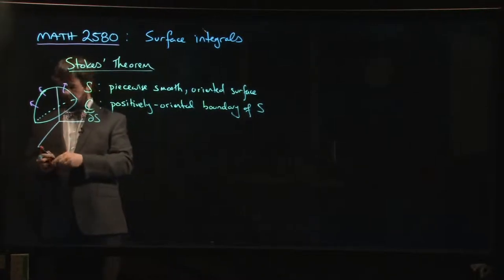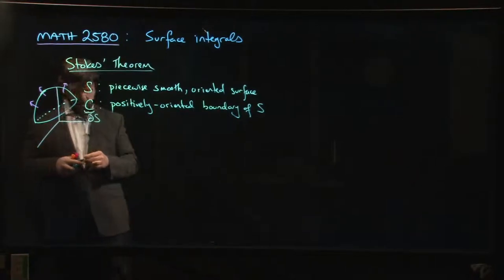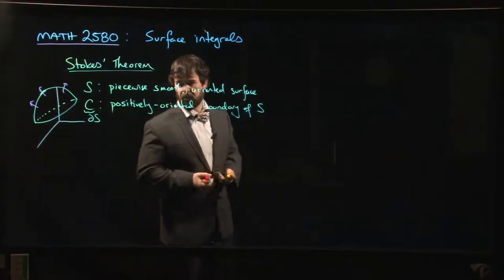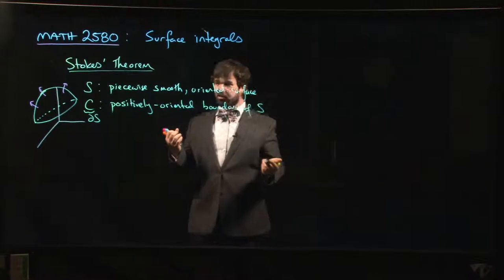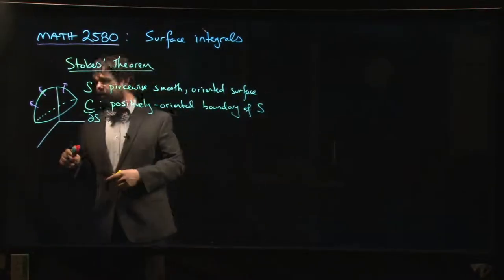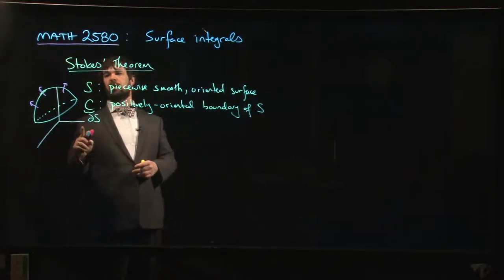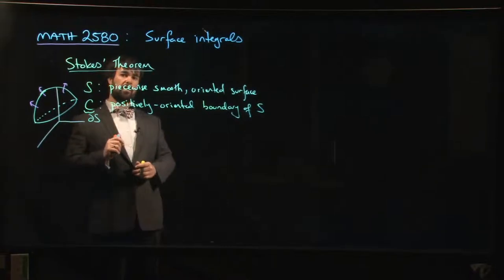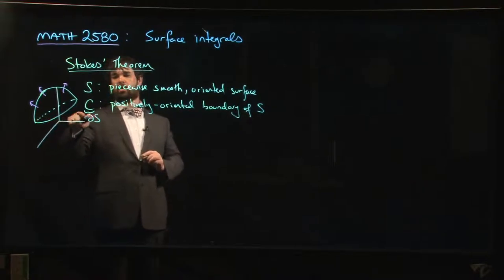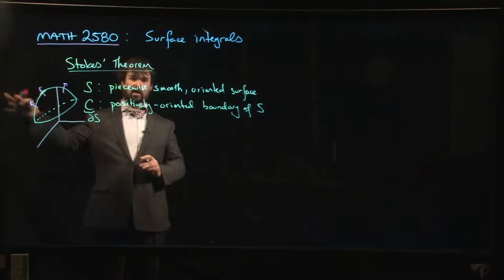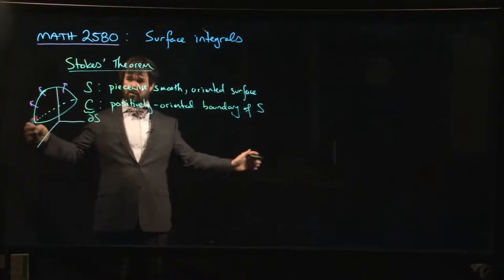So the positive orientation is a little bit tricky. It's one of these kind of right hand rules, left hand rules, however you want to think about it. So the way you get the orientation is you imagine yourself standing on the side of the surface corresponding to the normal vector. So your head's pointing in the same direction as the normal vector. And you want to walk around the curve so that the surface is on your left. So your left hand is over the surface, your right hand is off into space.